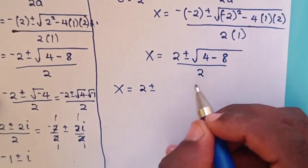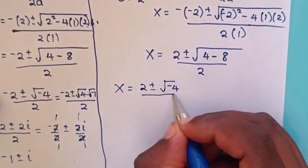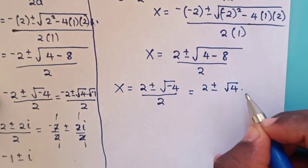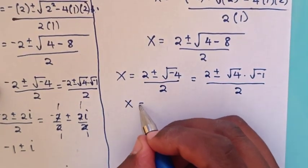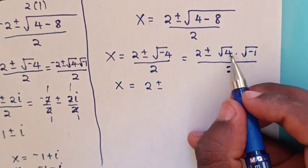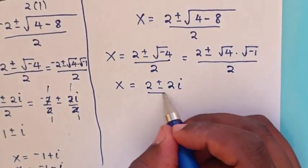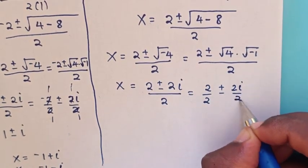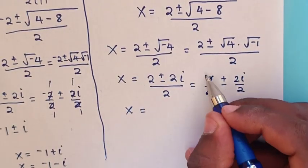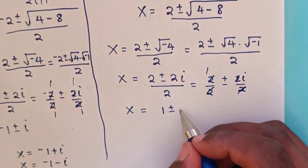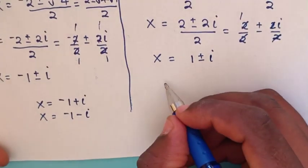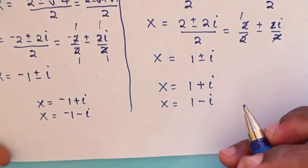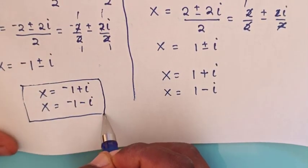Then x = (2 ± √(4 - 8)) / 2 = (2 ± √(-4)) / 2 = (2 ± 2i) / 2, which simplifies to x = 1 ± i. So the two solutions are x = 1 + i and x = 1 - i. These are all 4 roots of x in our problem.